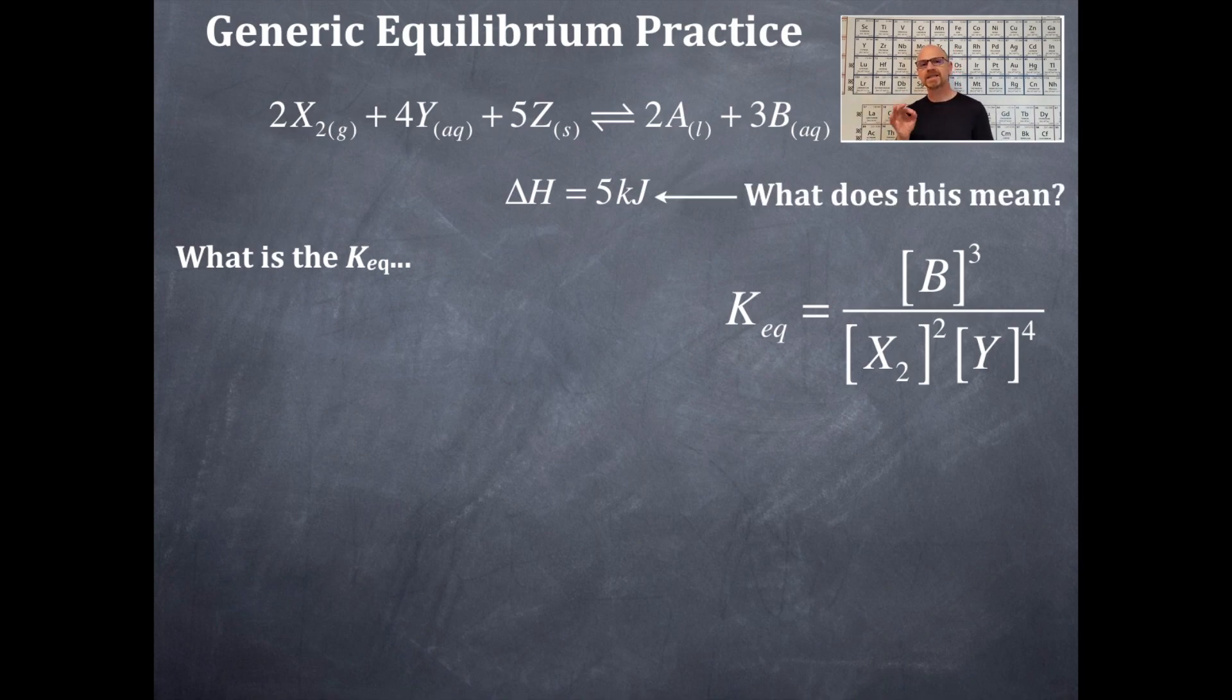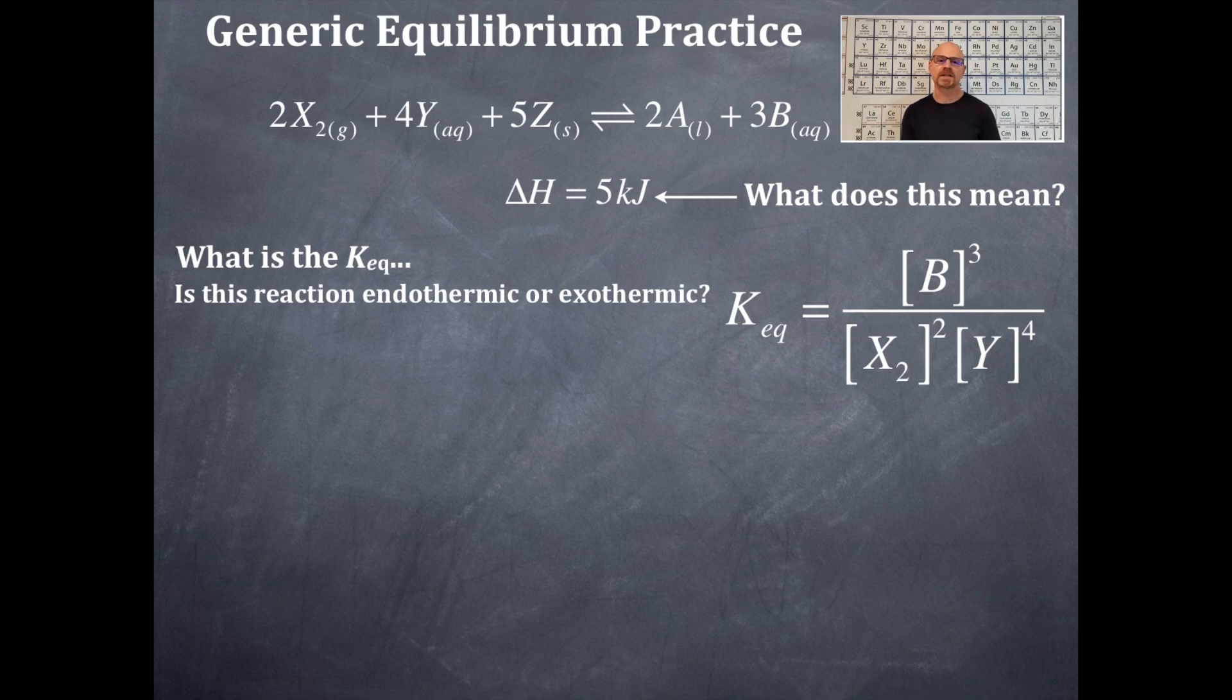So what does this mean? That delta H is change in enthalpy and it's 5 kilojoules. This number tells you if the reaction is endo or exothermic. It doesn't matter what the number is—it could be 0.5, 5, or 2 billion. The number itself doesn't matter, but the sign in front of the number does matter. This is a positive sign, so therefore this reaction here is endothermic. Where do I place the 5 kilojoules in this reaction? It is on the reactant side. If that delta H were negative, it would belong on the product side.